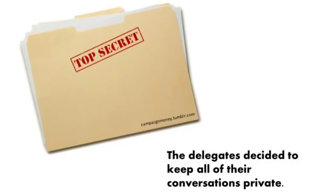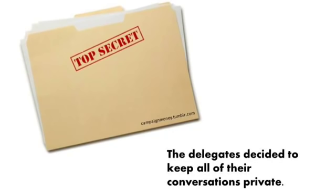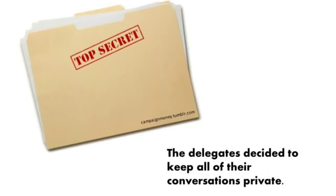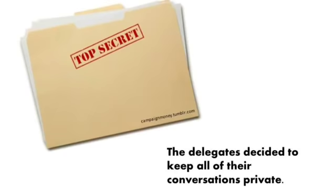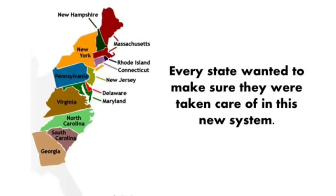So how were the delegates able to bring about such big change? One of the first things all the delegates agreed upon was to keep their conversations private. Nobody was allowed to write home or discuss with anybody outside the convention hall what they were talking about. This rule of secrecy makes Madison's notes more important, because without them we would still have no idea what was discussed over those three months. Under the Articles of Confederation, every state had equal power, so the delegates who arrived in Philadelphia wanted to make sure that their state would be taken care of under the new system.